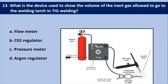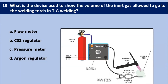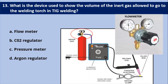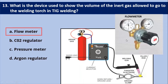Next question: what is the device used to show the volume of inert gas allowed to go to the welding torch in TIG welding? There are two flow meters — one shows the volume of gas inside the cylinder, and the other shows the volume of inert gas allowed to go towards the welding torch. So the answer is: a flow meter, as shown in the diagram.